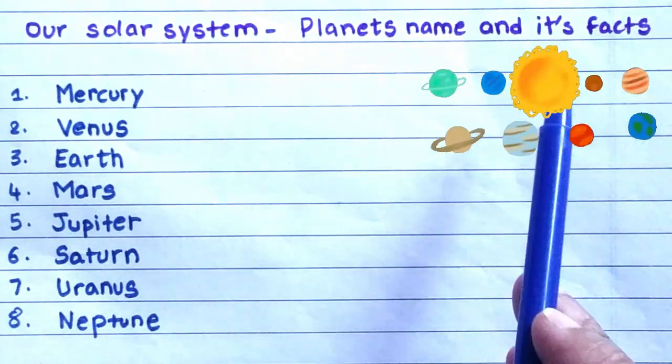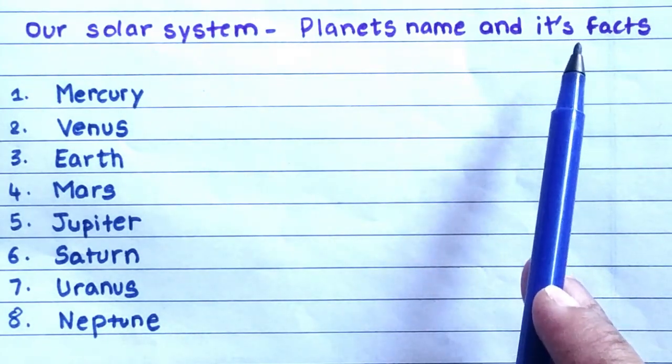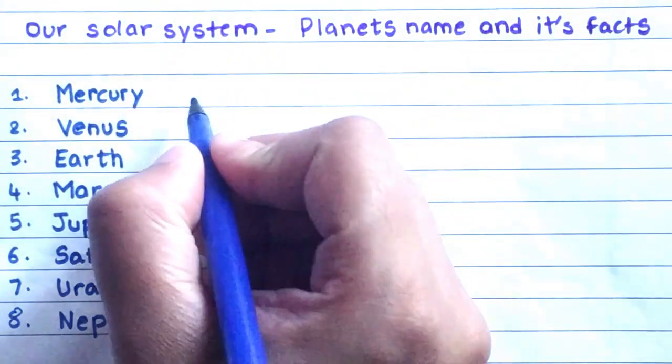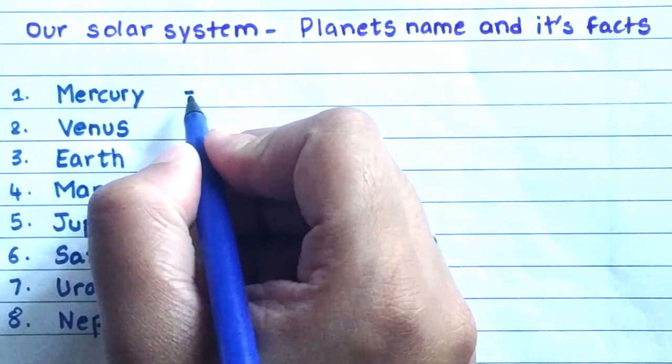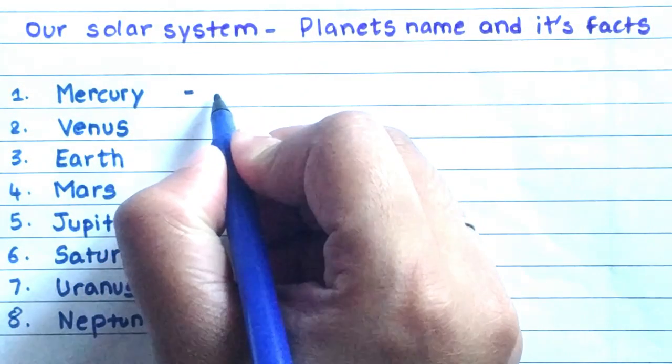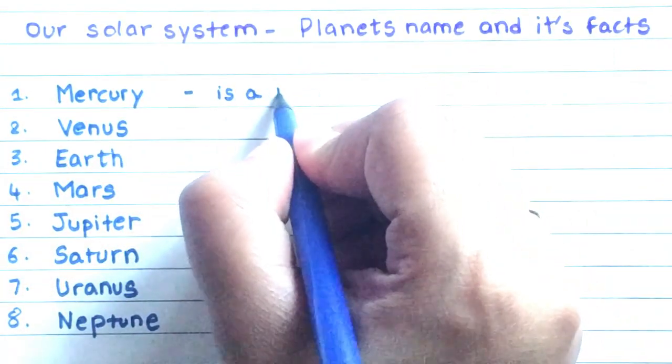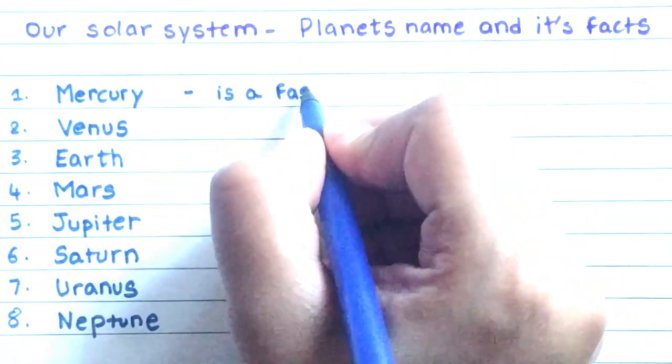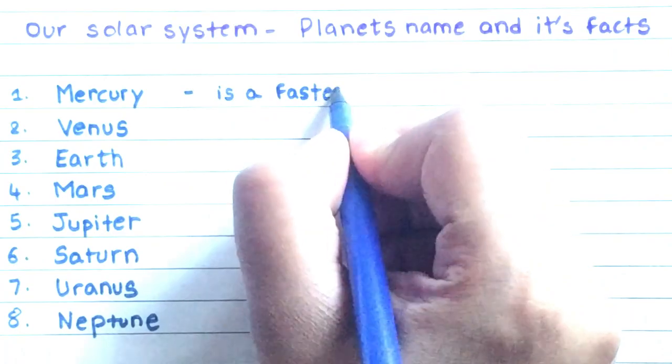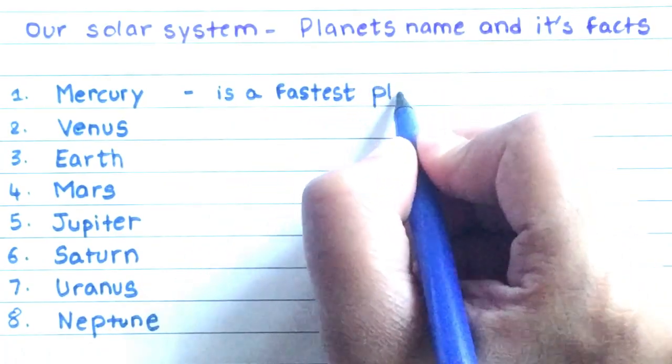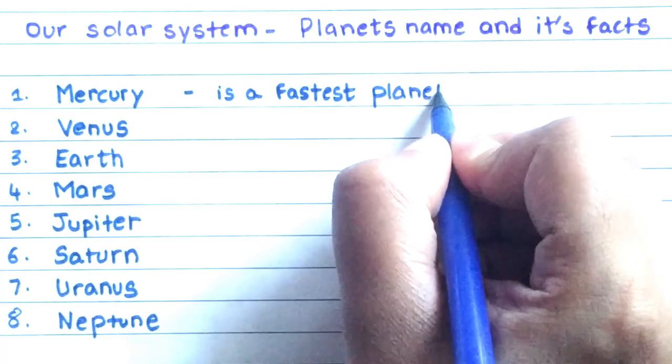Now let us learn its facts. Mercury. Mercury is a fastest planet.